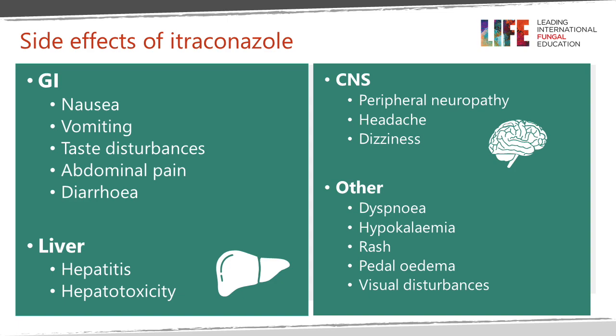Important side effects of itraconazole include nausea, vomiting, taste disturbance, abdominal pain, and diarrhoea. Vomiting and diarrhoea are particularly problematic with the oral solution and much less so with capsules. It can cause hepatitis and hepatotoxicity, although infrequently. In patients on long-term therapy, peripheral neuropathy is a problem, and some patients get headaches or dizziness. It can cause congestive cardiac failure, ankle swelling, and hypokalemia. Rarely it can cause a rash.